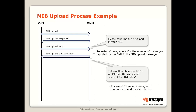The next step is a message called MIB upload next, which means: please send me the next part of your MIB. The ONU responds with information about the MIB — typically an ME and the values of some of its attributes. With extended messages, a single message can carry information about multiple managed entities. This process repeats X times, where X is the number reported in the initial MIB upload response. So if the ONU says 450 messages are needed, this repeats 450 times, after which the OLT has the full picture of the ONU's MIB and can begin configuring it.